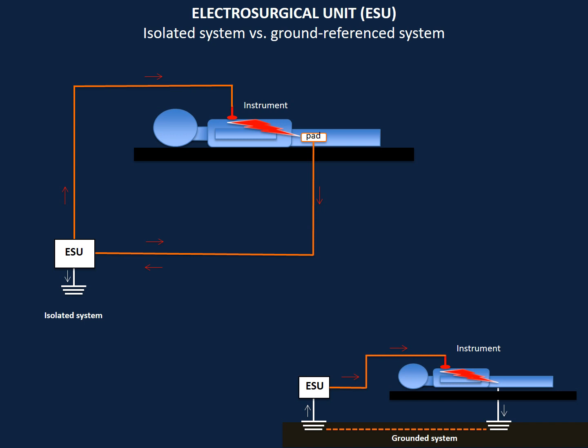With the old units, once the current enters the patient's body, it passes into the ground rather than back to the unit. The ground was an inherent part of the circuit, and the system was called a ground reference system. With the advent of isolated generator technology in the 1970s, the circuit is now completed by the generator and not by the ground. The unit recognizes the patient's return electrode as the preferred pathway back to the generator.